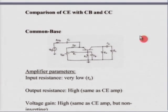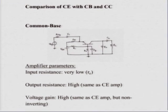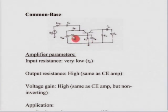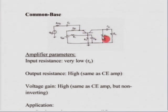We will not have time to look into the detailed analysis of both common base and common collector. What I have shown here is a typical circuit which you would use for a discrete common base amplifier. You can see a potential divider here for biasing, and you have a resistance R_e, a resistance R_c, and R_l.